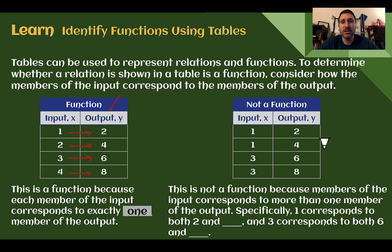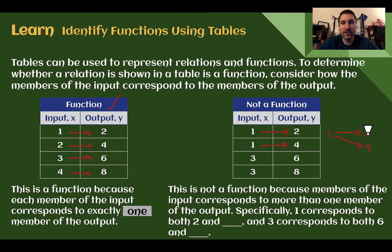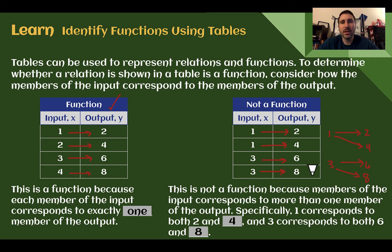Compared to not a function: if we check, 1 goes to 2 — that's okay — but we see another 1 that goes to 4. This would be like a mapping diagram where 1 went to 2 and 1 went to 4; the input went to more than one output — not a function. It's also a problem with 3 and 6: 3 went to 6 and 3 went to 8. One corresponded to 2 and 4; three corresponded to both 6 and 8. When an input goes to more than one output, it is not a function.